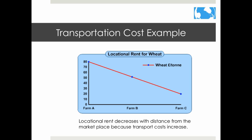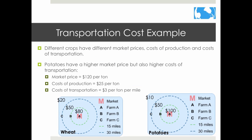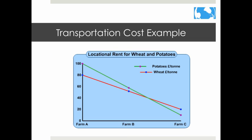Different crops have different market prices, so how do we decide between crops? Let's assume potatoes sell for $120 a ton — they cost more to produce and more to transport because they are bulkier. If you walked from the marketplace out into the countryside, you would see nothing but potatoes, then nothing but wheat. Close to the market a farmer can earn $20 more growing wheat than potatoes. In the middle zone either crop would work; in the furthest zone, wheat would be most profitable.